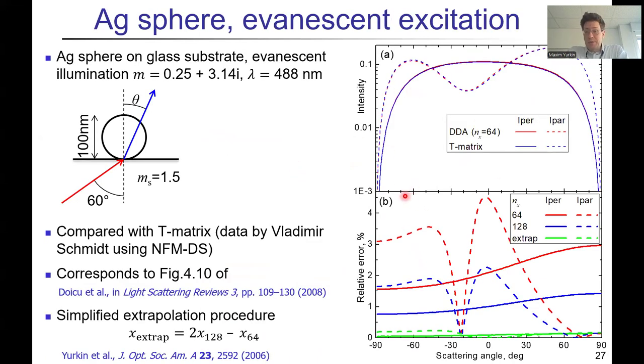And that was, well, described in this publication. Now you can use it in ADDA without any effort. Well, here is just one example that you can get accuracy within a width of the line by comparing it with other methods. So that's a sphere with evanescent illumination. So if you have some nano applications like that, or maybe you have, I don't know, some biological cells lying on the substrate. Again, this all can be rigorously considered in simulations.